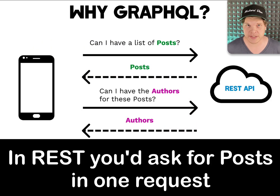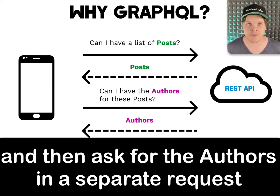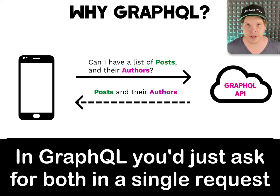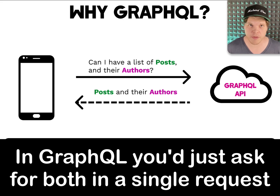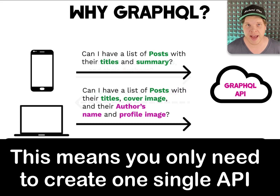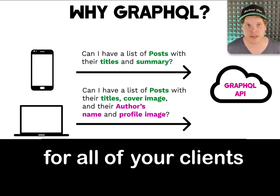In REST, you'd be asking: can I have all the posts, and then can I have all the authors for these posts? In GraphQL, you'd say: can I have all the posts and their respective authors in a single request? The ability to ask for exactly what you want means you only need to create a single API for all of your clients.